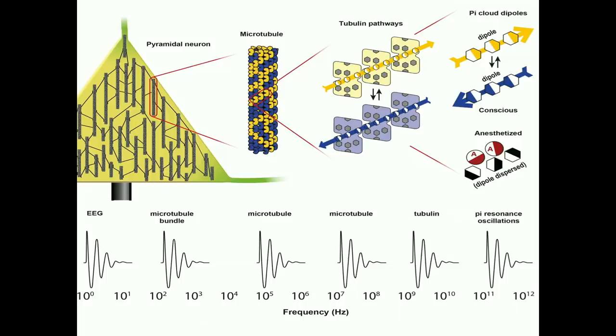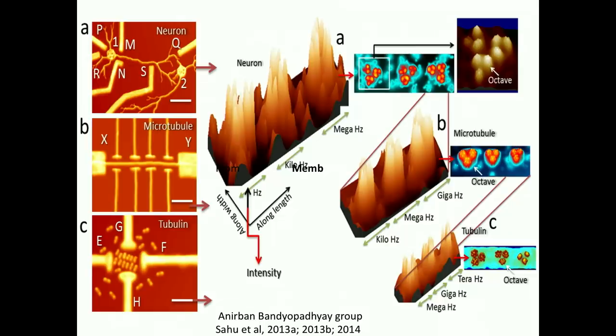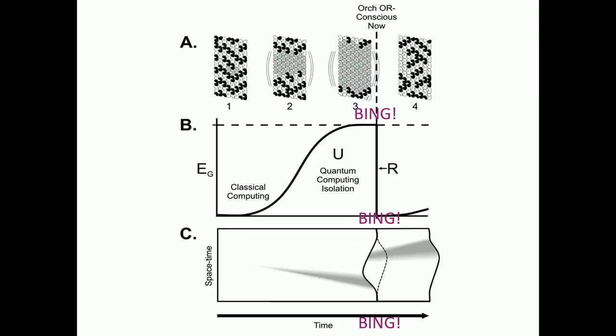And on the far right you see this is where anesthetics work. We had a paper in Nature Scientific Reports last year, showing that anesthesia dampens quantum vibrations in microtubules to selectively erase consciousness. There's evidence for this from the work of Anirban Bandyopadhyay showing experimentally quantum vibrations in microtubules in terahertz, gigahertz, megahertz, kilohertz, and hertz. So there's experimental evidence for this, for quantum vibrations in microtubules. So the basic idea is that there's a threshold is reached, there's a Bing moment in the microtubules in the brain, connected to fine-scale structure of space-time geometry, as you see at the bottom.